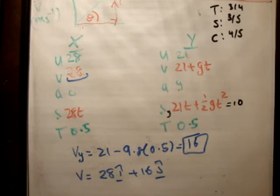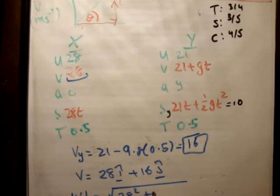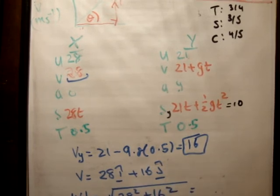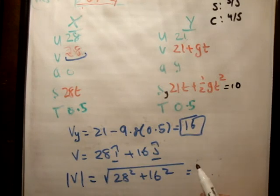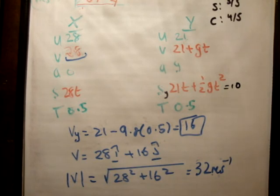So let's just get the magnitude of this. So the magnitude of v is equal to square root 28 squared plus 16 squared. And that's going to be equal to 32 meters per second. So the second part using the other time is the exact same. I'll leave that for you to do. Thanks for watching.